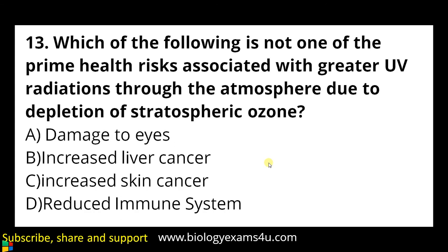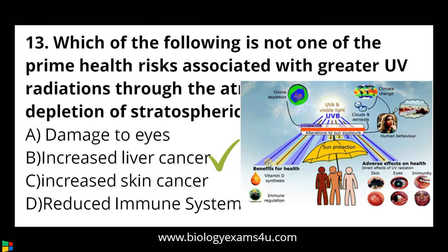Question number thirteen: which of the following is not one of the prime health risks associated with greater UV radiation through the atmosphere due to depletion of stratospheric ozone? a) Damage to eyes, b) increased liver cancer, c) increased skin cancer, d) reduced immune system. UV rays can damage eyes, cause skin cancer through DNA mutation, and reduce the immune system. The unrelated option is increased liver cancer.